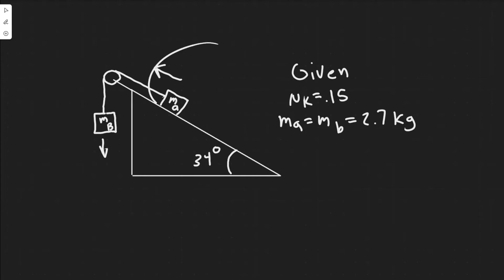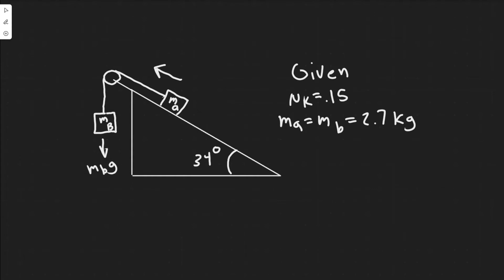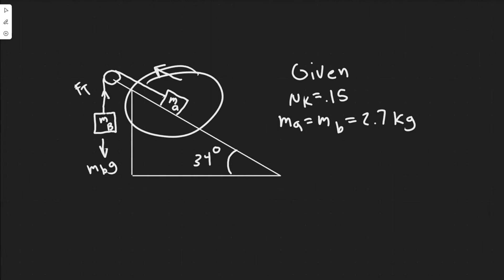Let's start labeling the forces on MB. It has the force of gravity FG, which equals MB times g, acting downward. It also has a tension force FT pulling it up.